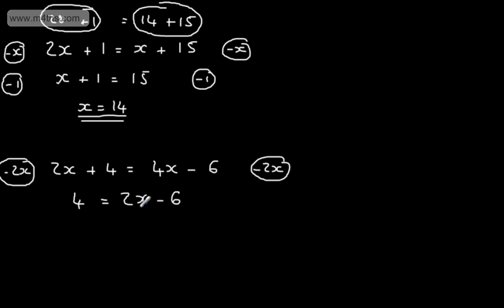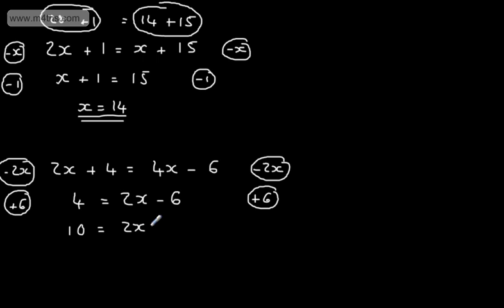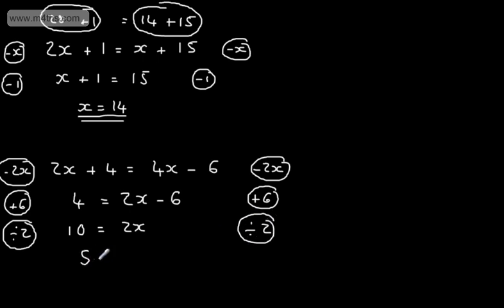I want 2x by itself, so I'm going to add 6 to both sides. All I'm doing is undoing this equation using inverse operations. Adding 6 to both sides gives me 10 equal to 2x. I now want x, so I'm simply going to divide both sides by 2. Dividing both sides by 2, we get 5 on the left-hand side and 1x on the right, so x equals 5.